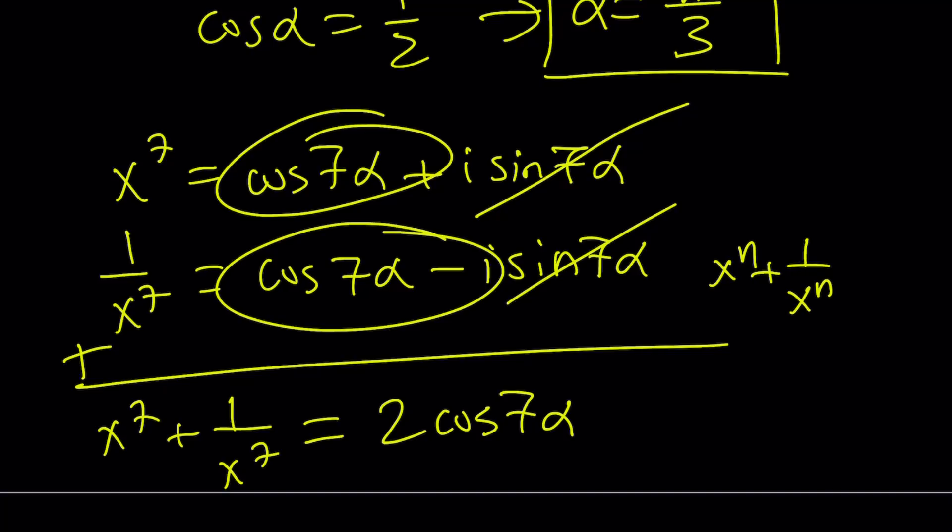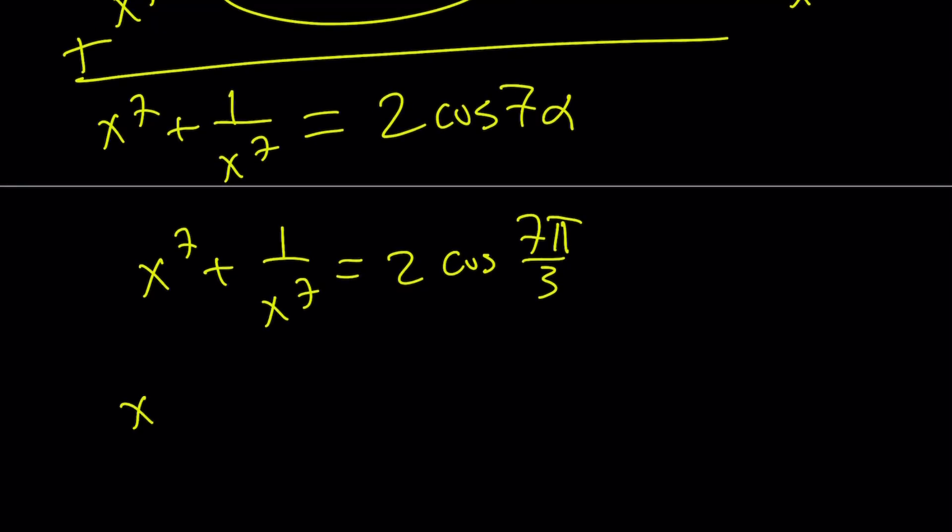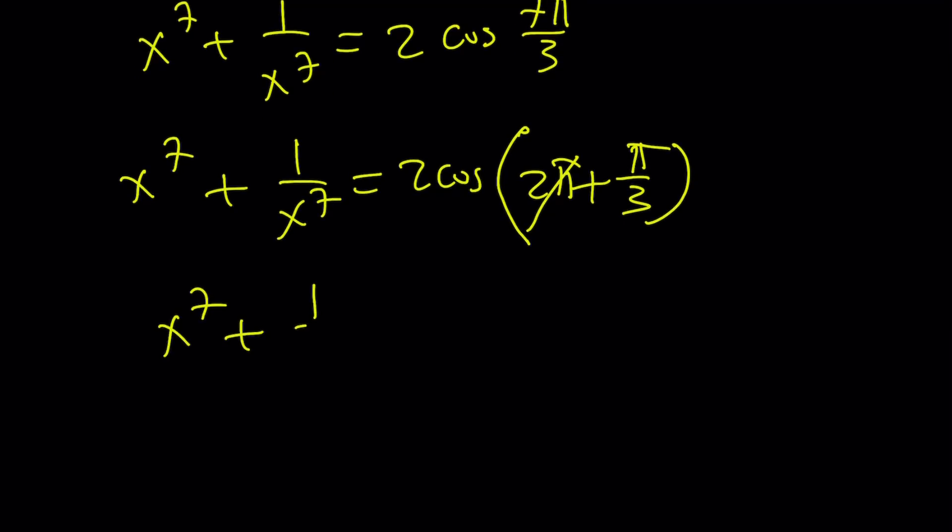Anyways, α was π/3, so let's go ahead and replace α with π/3, 7 times π/3, but 7π/3 is greater than 6π/3. Come on. So we can write this as 2π + π/3, and 2π is like, you know, 0. You can just totally ignore it. And it just becomes the same thing. cos(π/3) is 1/2, so x^7 + 1/x^7, just like x + 1/x, becomes 2 times 1/2, which is 1. And this brings us to the end of this video.